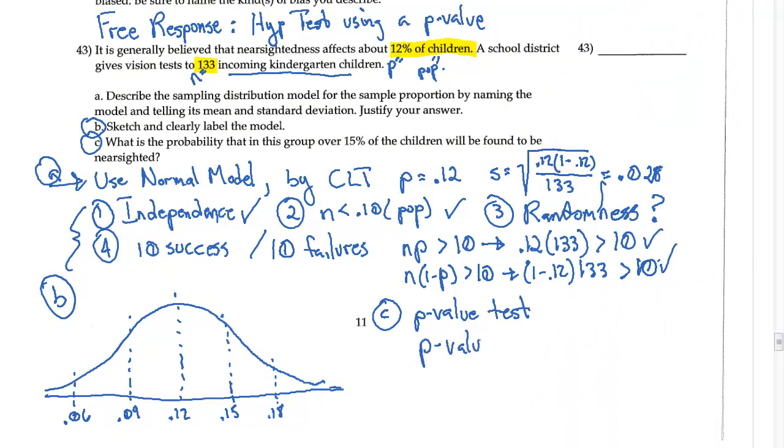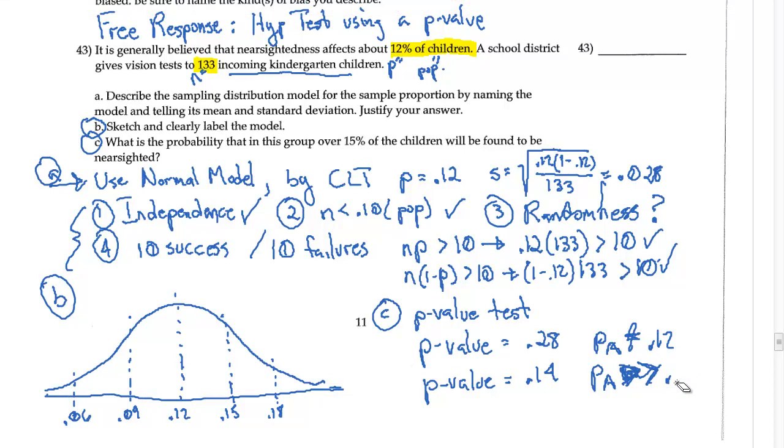So depending upon how you wrote your hypothesis test, your p-value is going to be equal to 0.28 for p-alternative not equal to 0.12, and then your p-value would be equal to 0.14 if your alternative hypothesis was greater than 0.12. So your p-alternative is greater than 0.12.